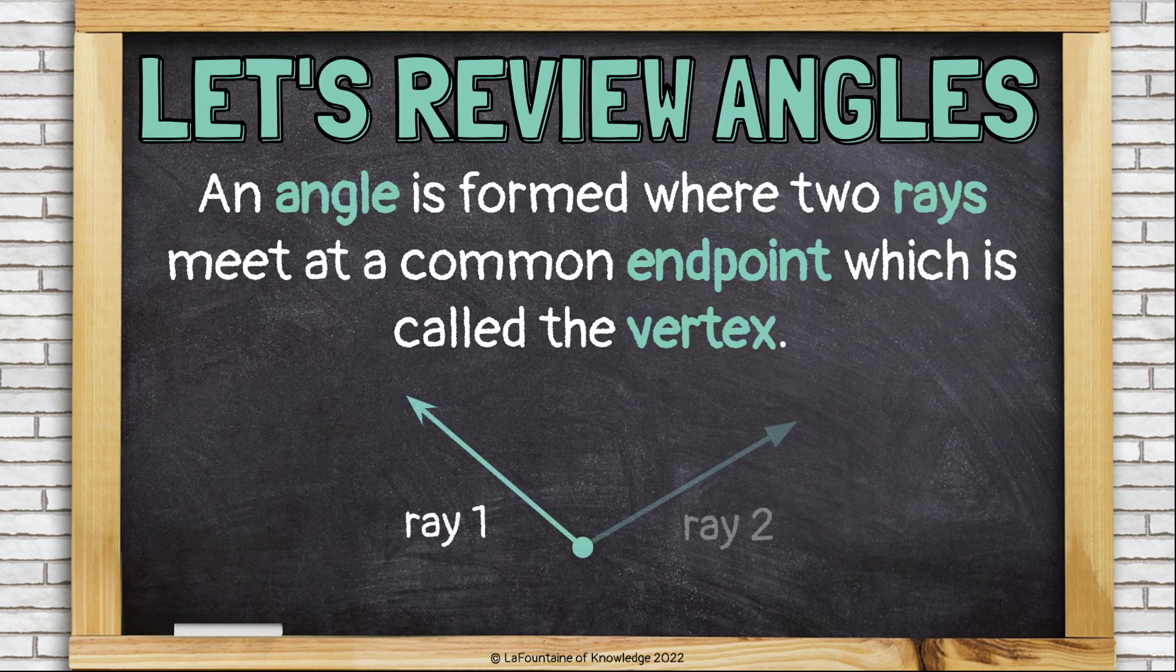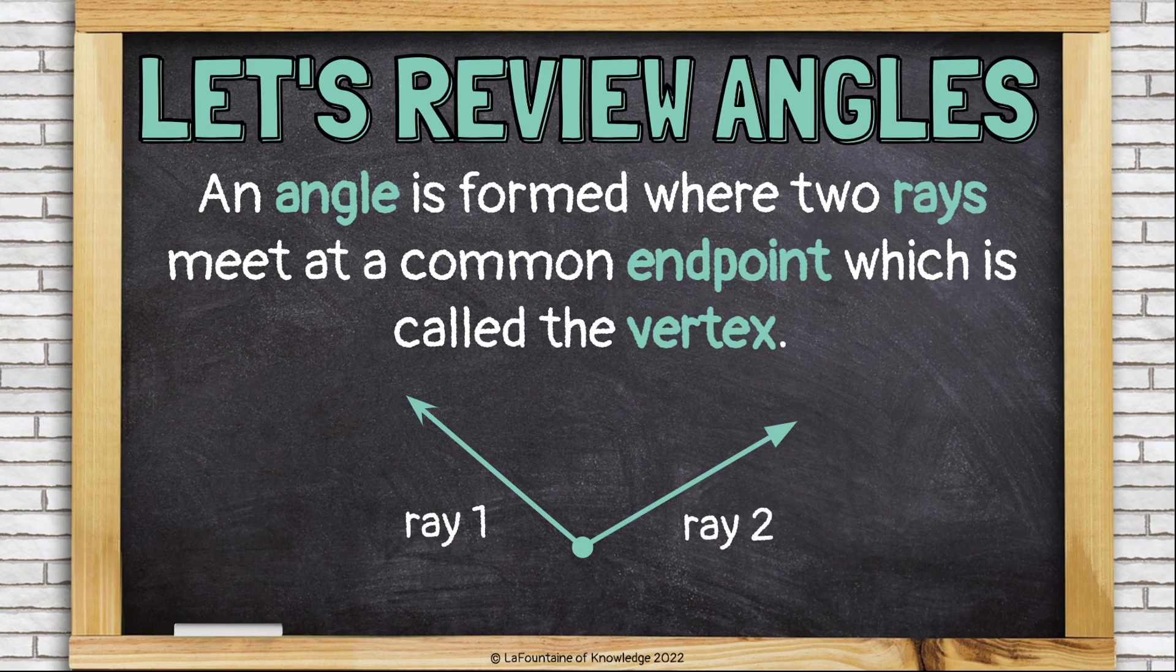Here's a ray, and here's another ray. At the place where they meet, we have a point, and this is called the vertex. These two rays together create an angle.